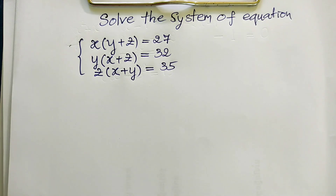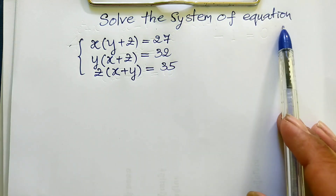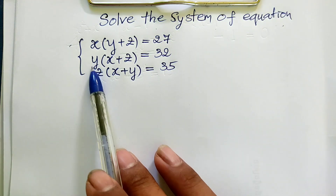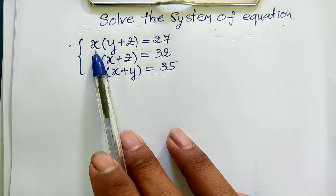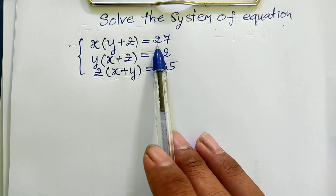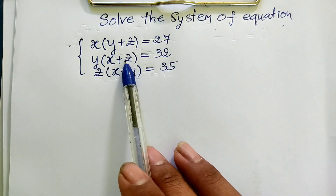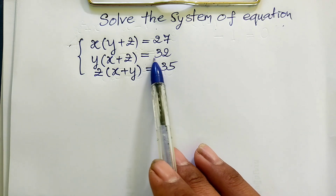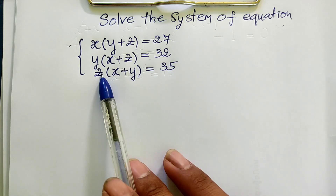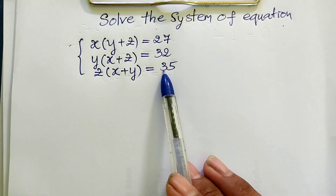Hello everyone, welcome to my YouTube channel. Today I have one exercise on paper — a system of equations. The system is: h times y plus z equals 27, h times z plus y times z equals 32, and z times h plus y equals 35.